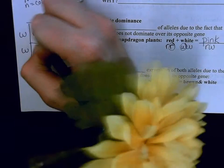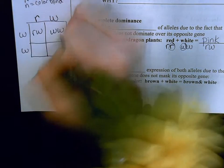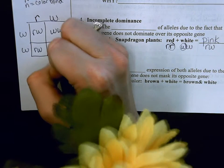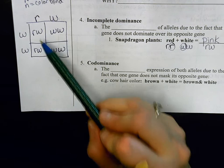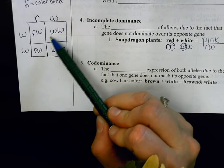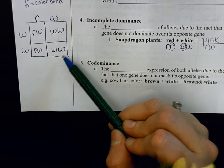Now if I put them into my Punnett square, I'm going to get my offspring, and you'll see that I have offspring that are rw's and offspring that are just little w, little w's.